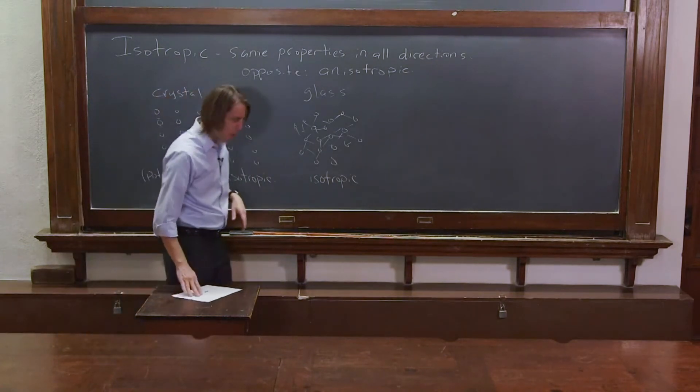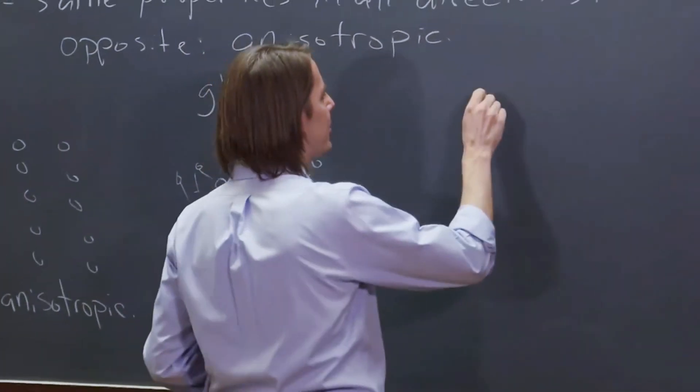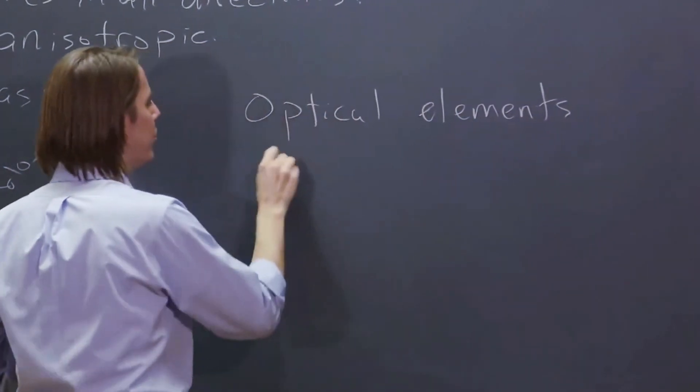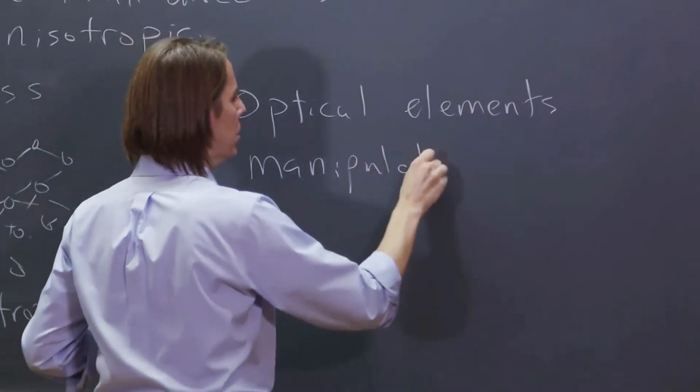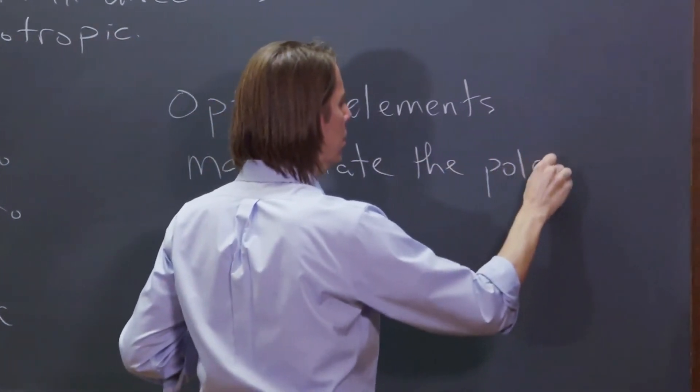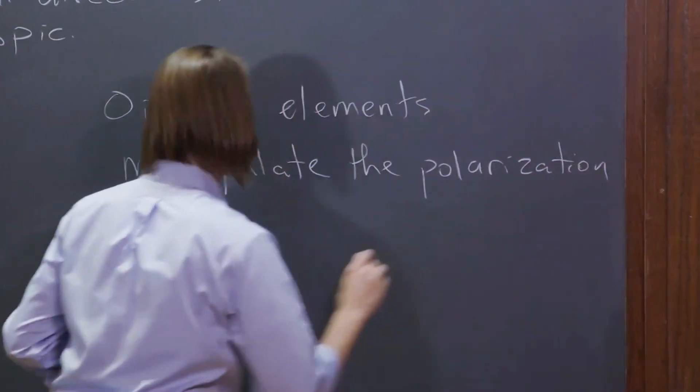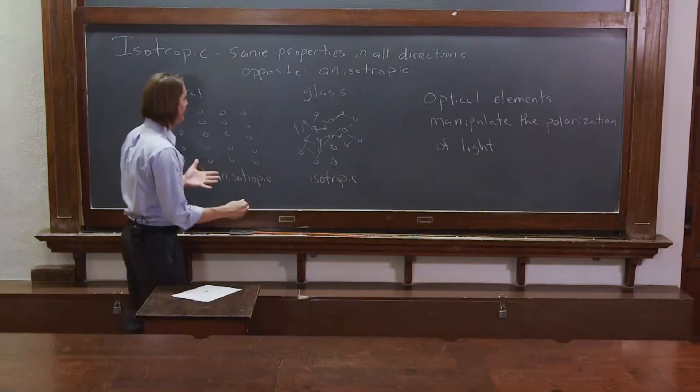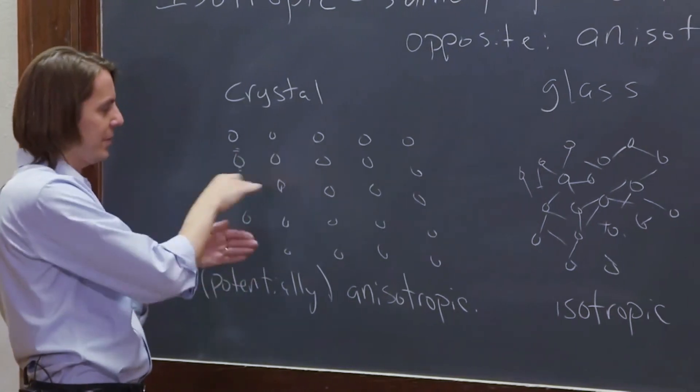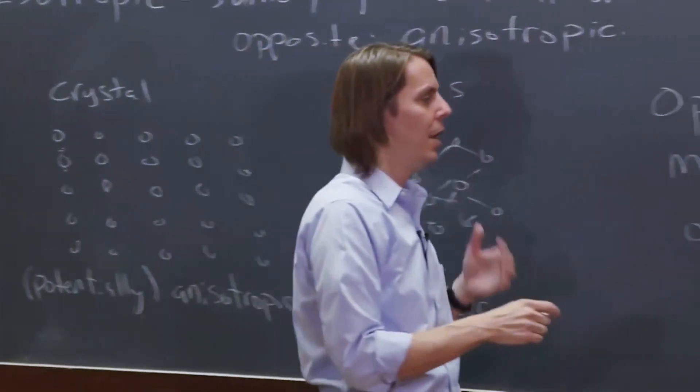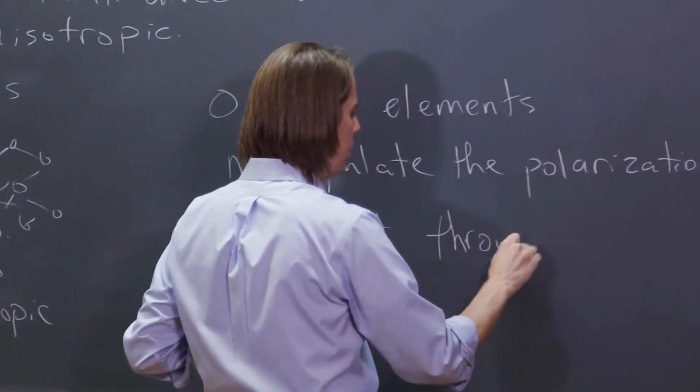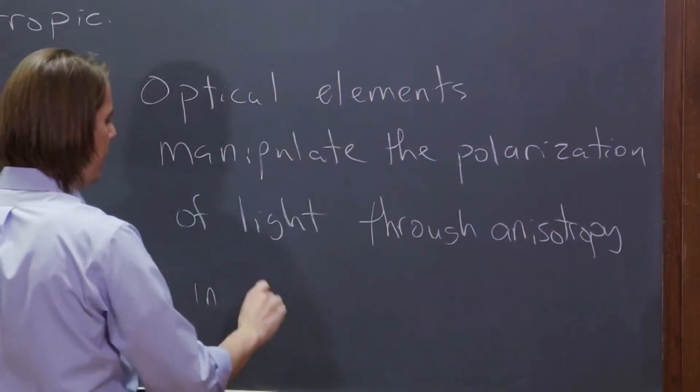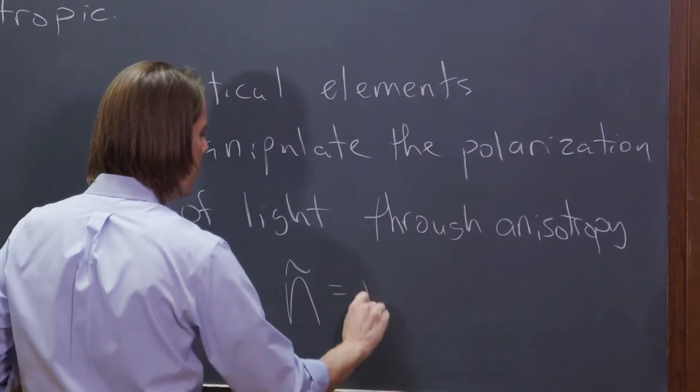So here is what really happens then. Optical elements manipulate the polarization of light through anisotropy, and remember the polarization of light, the definition is it's just the direction of the E field, and we just talked about how the direction of the E field will see different things depending on the material, through anisotropy in the complex index of refraction. Remember this thing?